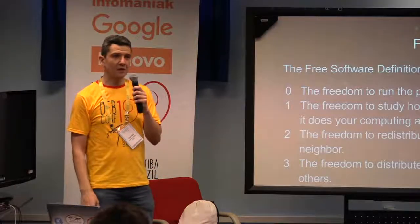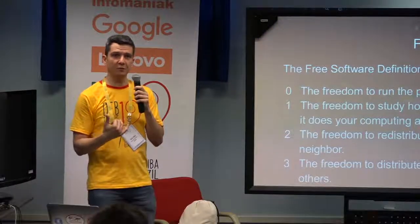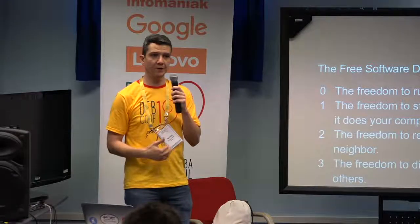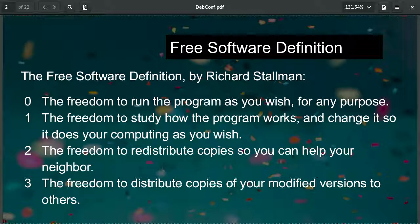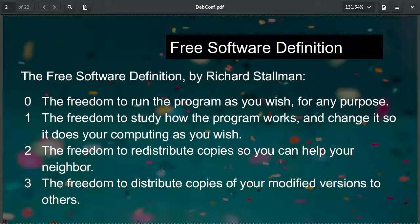Open source was preceded by the free software movement. We have a lot in common. The free software definition was created by Richard Stallman, and basically there are four freedoms that we share. Freedom zero: the freedom to run the program as you wish for any purpose. Freedom one: the freedom to study how the program works and change it so it does your computing as you wish. Freedom two: the freedom to redistribute copies so you can help your neighbor. Freedom three: the freedom to distribute copies of your modified versions to others. Those are the four freedoms, and this has been working for over 35 years.